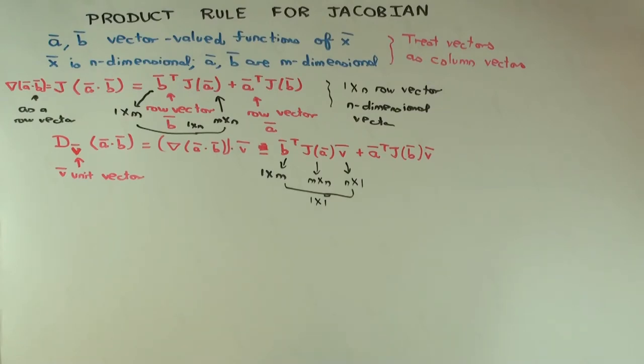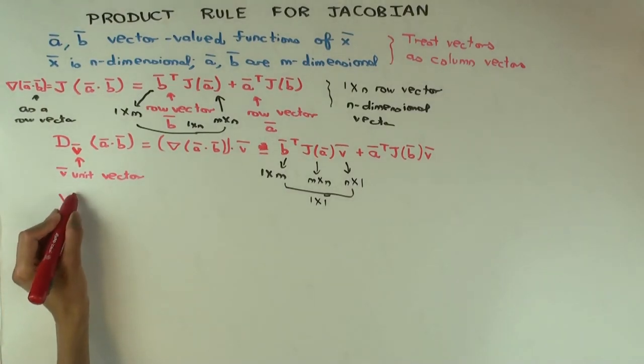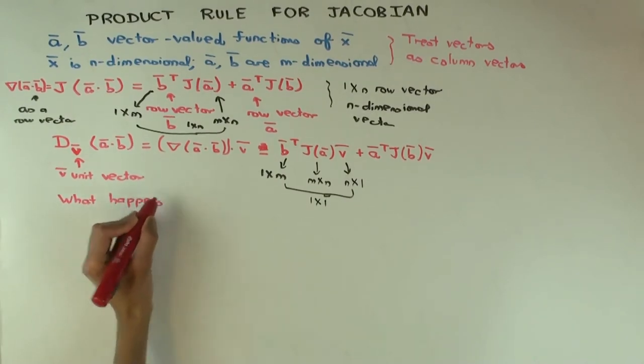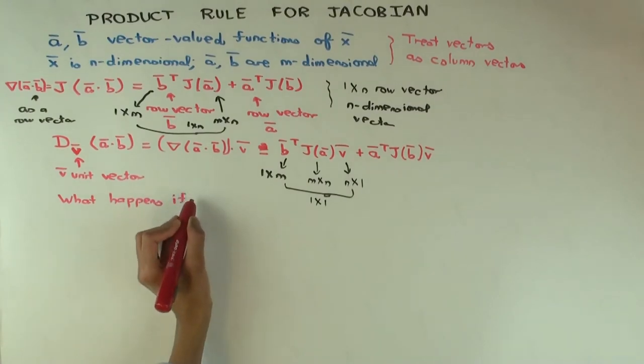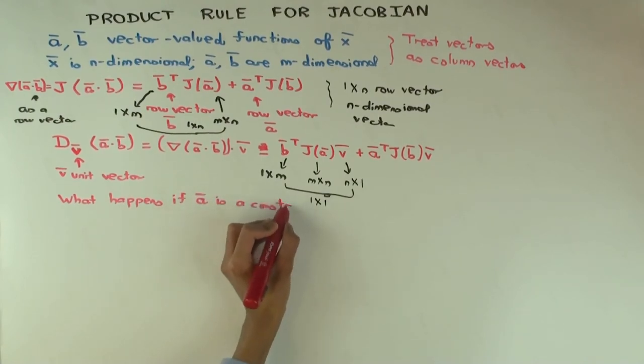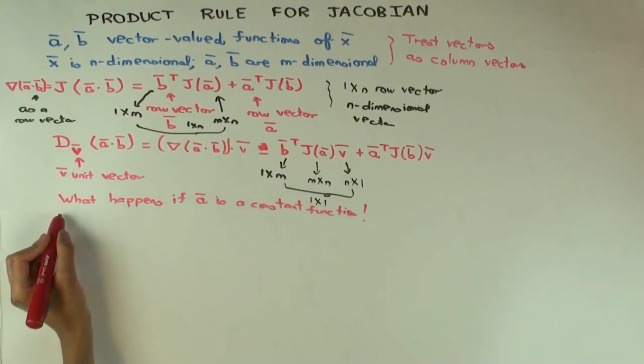Now I want to take a special case, which is, what happens when one of these is constant? So that's like pulling out constants. So what happens if a is constant and what happens if b is a constant function? Let's just say a is a constant function because the other one would be similar. So that means it's a constant vector.